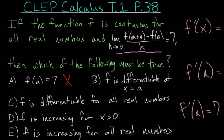Going on to letter B: f is differentiable at x equals a. When x is equal to a, the derivative is equal to 7. So this is true — it is differentiable at that point because we were actually able to find the derivative at that point.